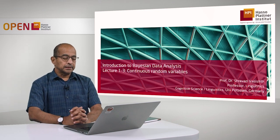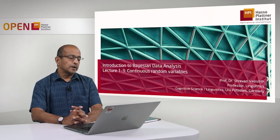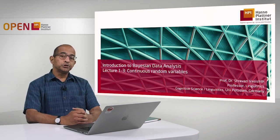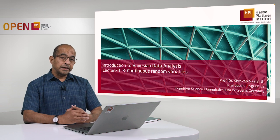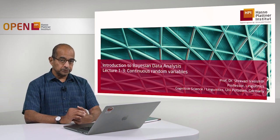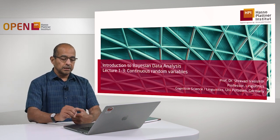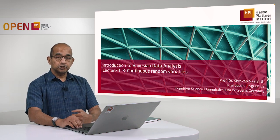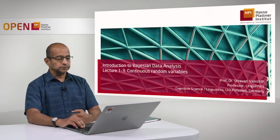In this third lecture, I'm going to introduce a very important example of a continuous random variable — one involving the normal distribution.